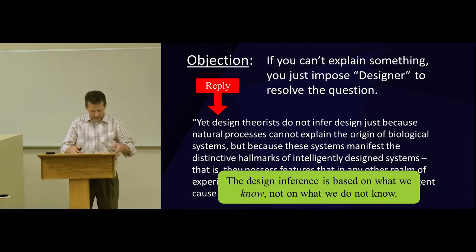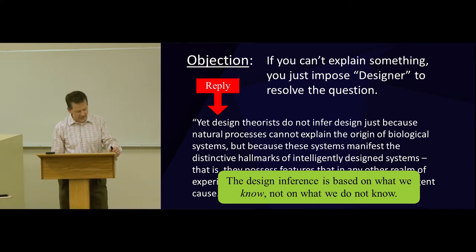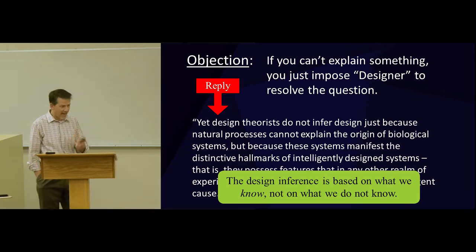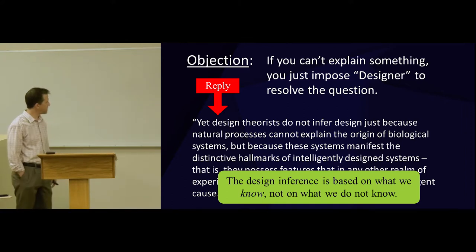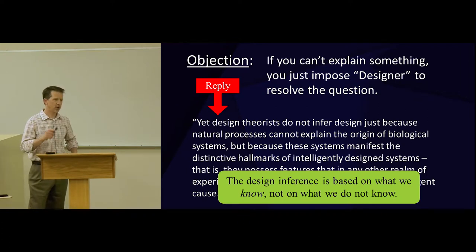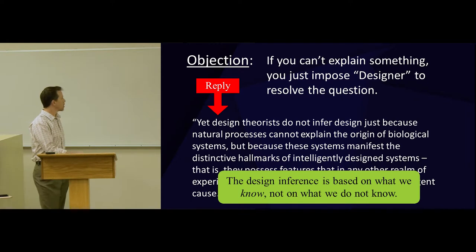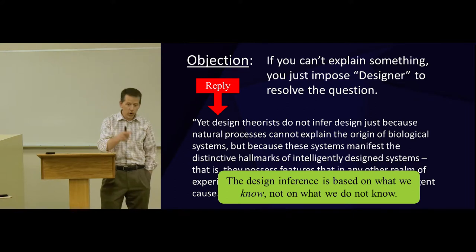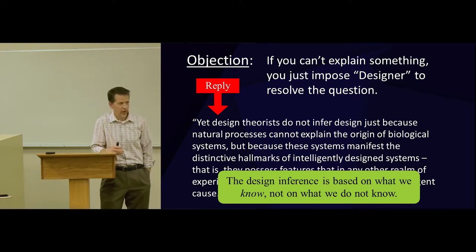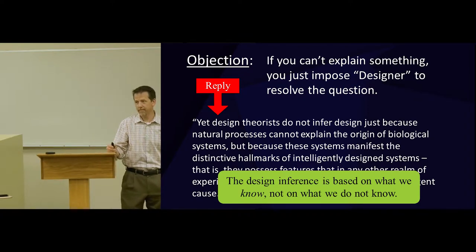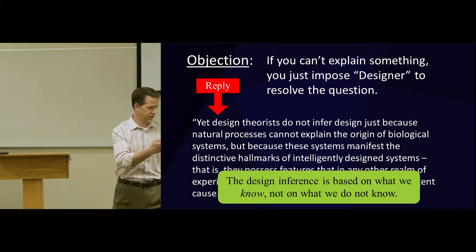Yet design theorists do not infer design just because natural processes can't explain the origin of biological systems. But because, and this is important, these systems manifest the distinctive hallmarks of all intelligently designed systems. That is, they possess features that in any other realm of experience would trigger the recognition of an intelligent cause. I would put it this way. The design inference is based not on what we don't know, but what we know. It looks intelligent. And that's how we conclude. It's not the absence of evidence, it's the presence of evidence if it's done right.